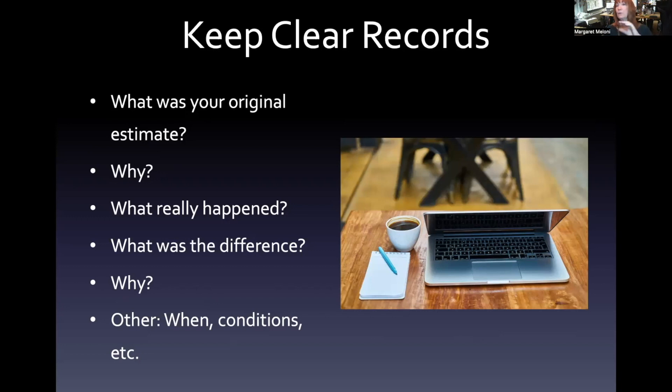So what is your original estimate? Why? What really happened when the work was completed? What was the actual? What was the difference between the estimate and the actual? We call that a variance.